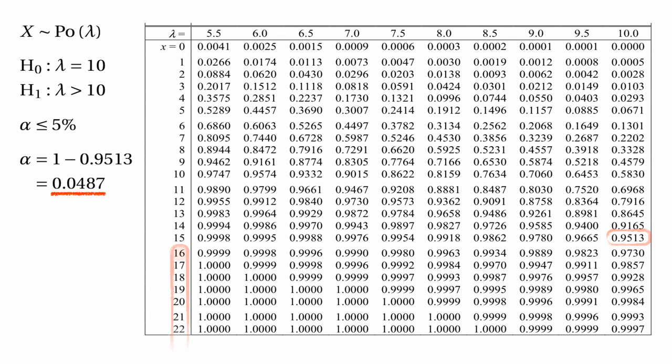There's a much quicker way of obtaining this answer if you know what to look for. What we have to do is scan our way up the right-hand column until we reach the probability that's about 0.95. We scan up until we hit 0.9513, and then — this is the crucial bit — instead of heading along that row, you head along the row below until you hit 16. That tells you the critical region is the numbers 16, 17 and above, and the critical value is 16. You must remember to look along the row that's one below, because the probability that x is greater than or equal to 16 is 1 minus the probability that x is less than or equal to 15.